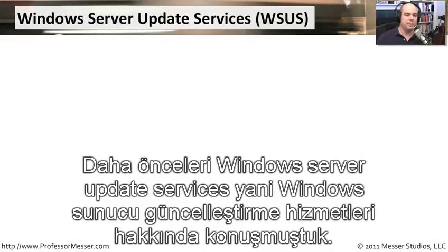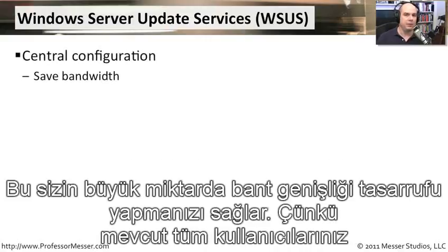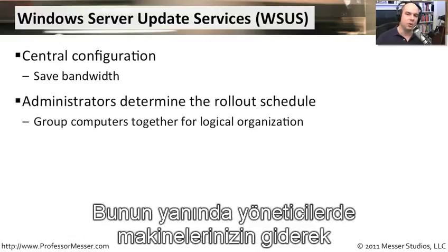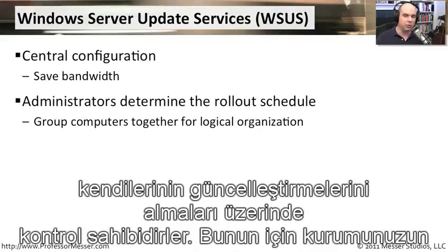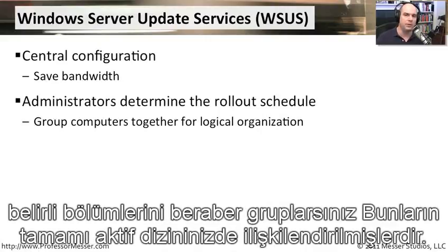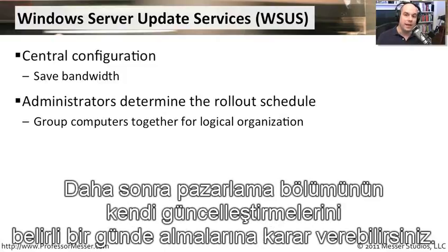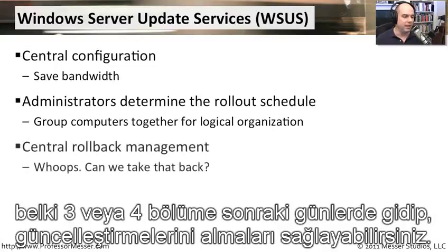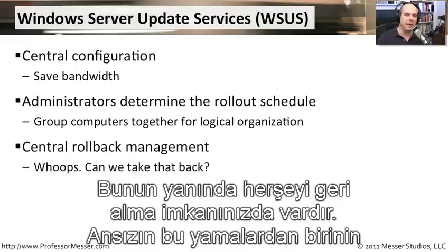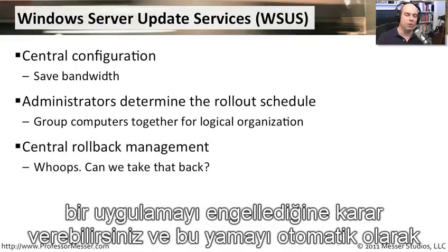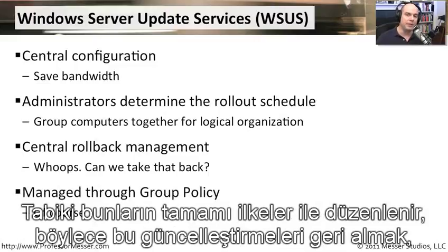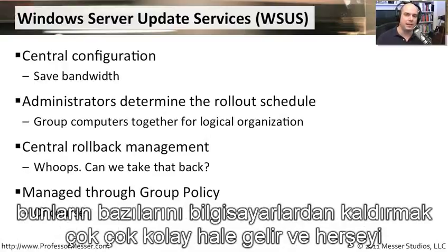Windows Server Update Services, abbreviated WSUS, can save a lot of bandwidth because all users go to a central server to get their patches. The administrator controls when machines go out to get updates and can group parts of the organization — for example, marketing gets updates on a certain day, and if that goes okay, engineering gets theirs next. You can also roll back updates centrally if a patch breaks an application, all managed through group policy, making it easy to roll out and pull back updates in a large enterprise environment.